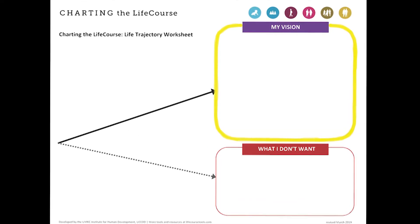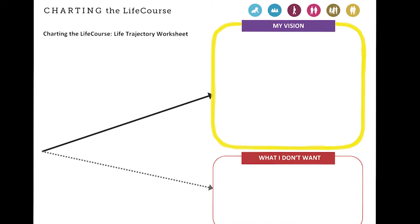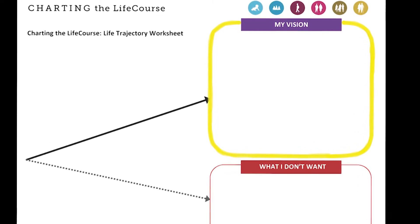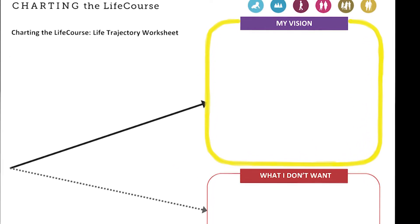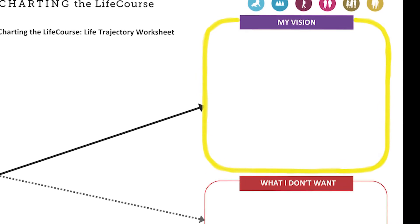After the individual conversation, answers about what makes a good life should be documented in the top right-hand box labeled My Vision. Because there are many unique and individual interests that encompass a vision for a good life, you must be creative when discussing and capturing what a good life is and what it is not. It is important to make sure the individual with a disability understands options for a good life to the best of her capabilities.